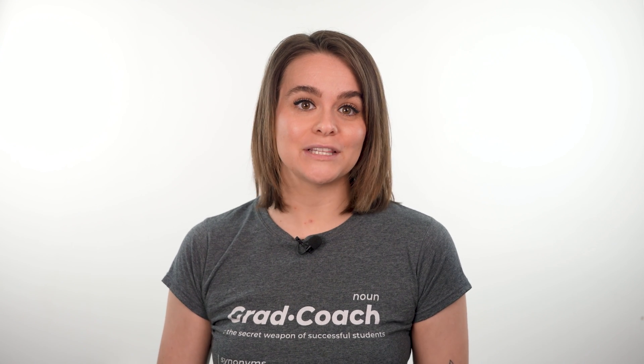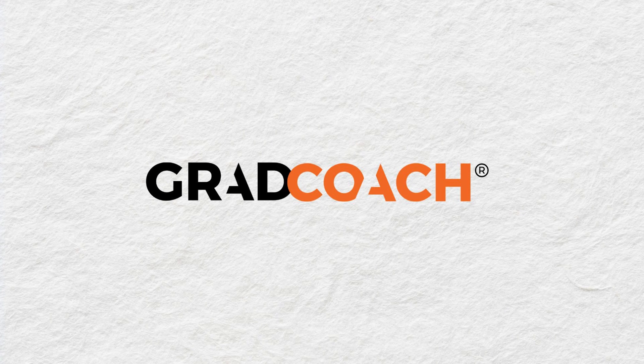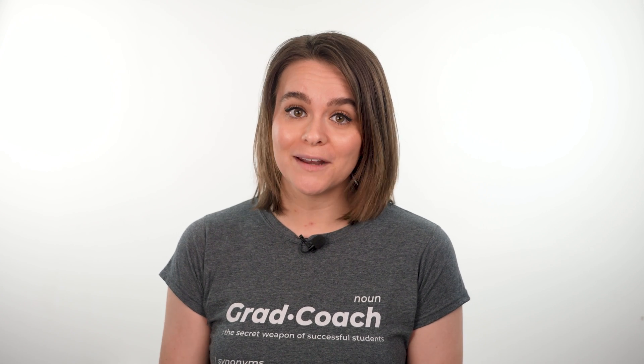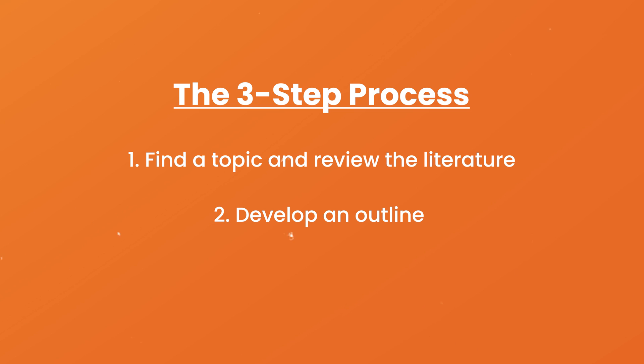With that basic foundation laid, let's get down to business and look at how to write a research paper. While there are many potential approaches, there are broadly speaking three stages to the writing process. We will present a straightforward three-step process: first, find a research topic and review the existing literature; second, develop a provisional structure and outline for your paper; and third, write up your initial draft and then refine it iteratively.